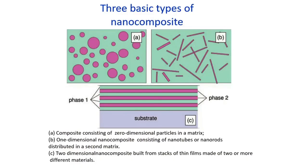There are three basic types of nanocomposites: Type A — 0D particles embedded in a matrix; Type B — 1D nanocomposites using nanotubes or nanowires in a matrix; and Type C — 2D nanocomposites built from stacks of thin layers, where one phase and a second phase are stacked on each other.